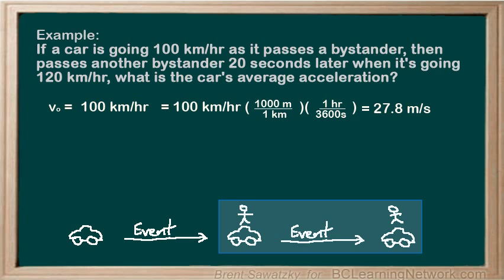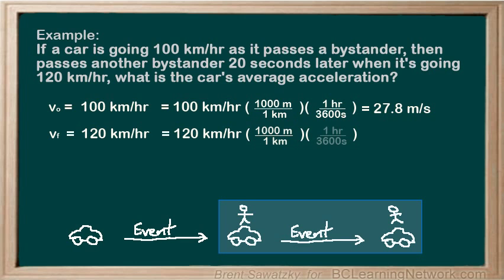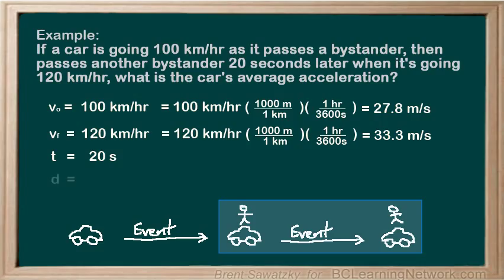Next is Vf, our final velocity. Since our event ends with the passing of the second bystander, Vf is 120 kilometers per hour, which converts to 33.3 meters per second. The time of our event is 20 seconds — from when the car passed the first bystander to when it passed the second. We'll also note D for displacement, which is how far the car traveled during this event — we don't know this yet, so we'll put a question mark. We should also list acceleration A, which we also don't know.